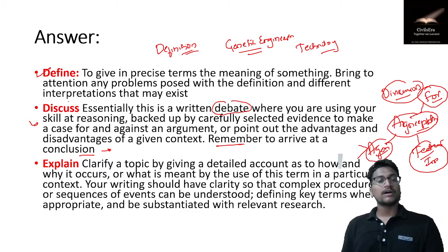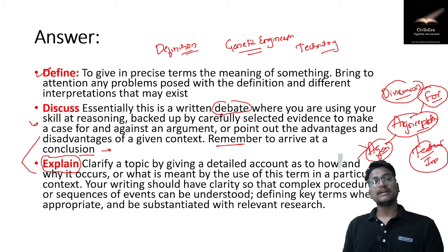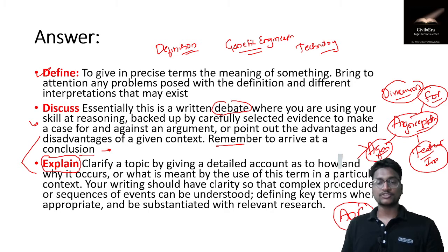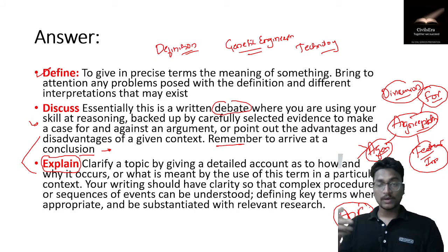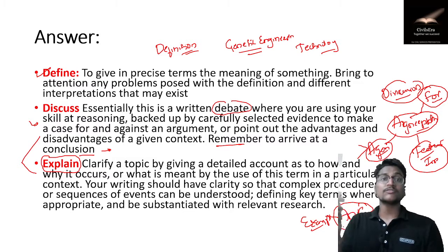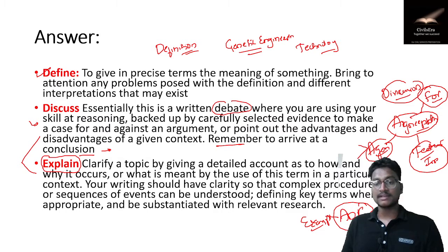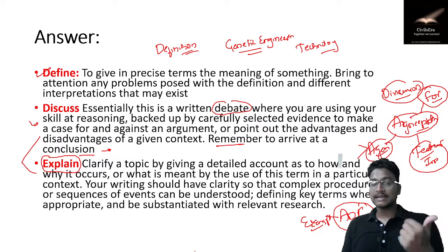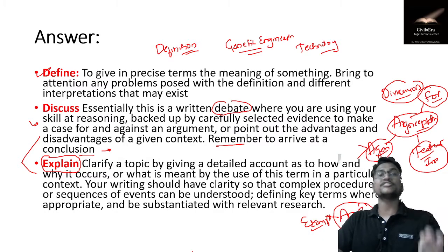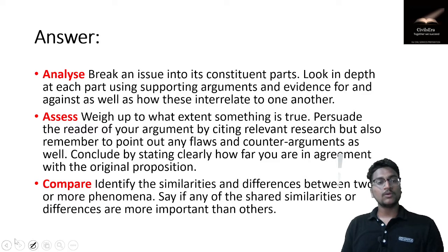The next keyword is 'Explain,' which is quite similar to 'Discuss.' For example, a question on the anti-defection law — you should explain what it is, which articles are included, whether any schedule is associated with it, examples of anti-defection law cases, and recent instances. You should link these ideas and provide a brief for-and-against perspective. Always substantiate your arguments.